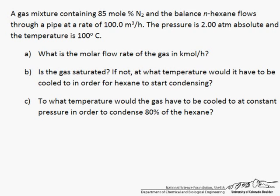This is a problem that combines the ideal gas law with Raoult's law. We have a gas mixture, it's 85 mole percent N2 and the balance N-hexane, flowing through a pipe at a rate of 100 meters cubed per hour. The pressure is 2 atm absolute, the temperature is 100 degrees C.